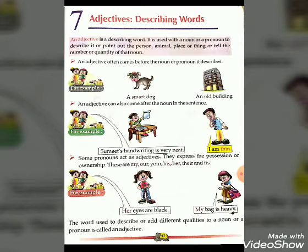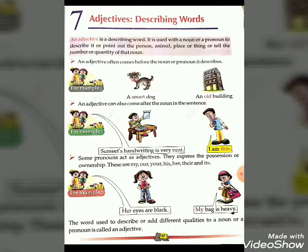Now let's start our revision. An adjective is a describing word. It is used with a noun or pronoun to describe it or point out the person, animal, place or things, or tell the number or quantity of that noun.